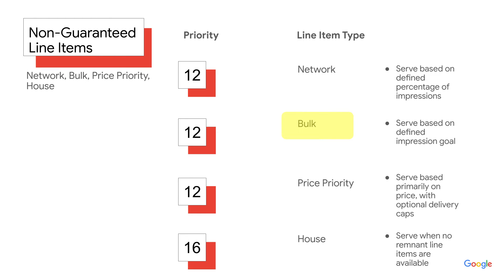The next priority item are bulk line items. These serve based on a defined impression goal. Because the line item is not guaranteed, this goal functions like an impression cap, limiting the number of delivered impressions. This line item can be used for partners who have ordered a maximum number of impressions, but aren't as concerned with timelines or guarantees.